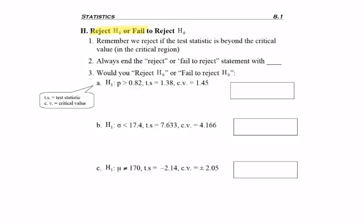And now let's practice deciding whether we reject or fail to reject H-naught based on just the critical values. There's another method we'll talk about in a minute.